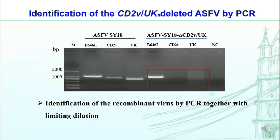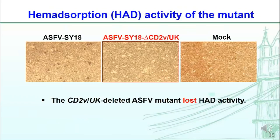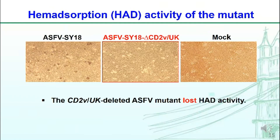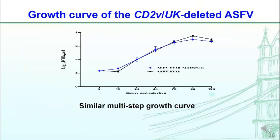To confirm the absence of CD2V in the mutant virus, we examined hemadsorption activity of the mutant. As expected, the mutant virus had lost hemadsorption activity. Then we compared the growth curves of the mutant virus with the wild-type virus. The two viruses showed similar growth curves in PAM cells.